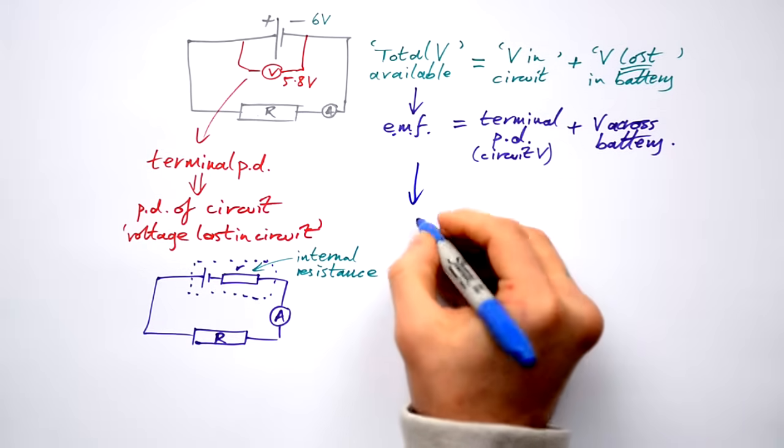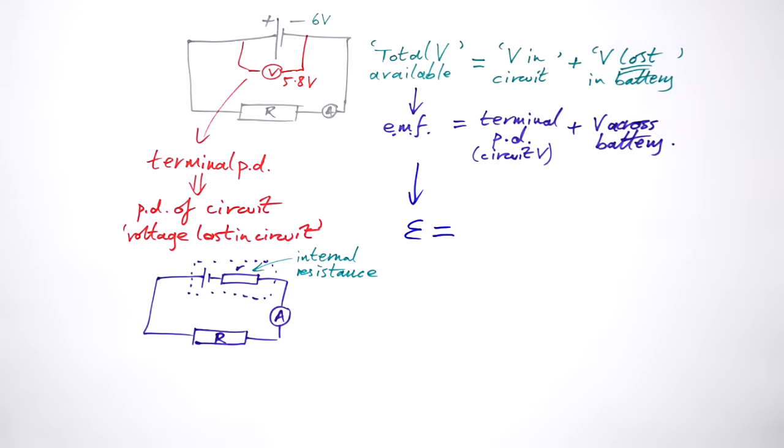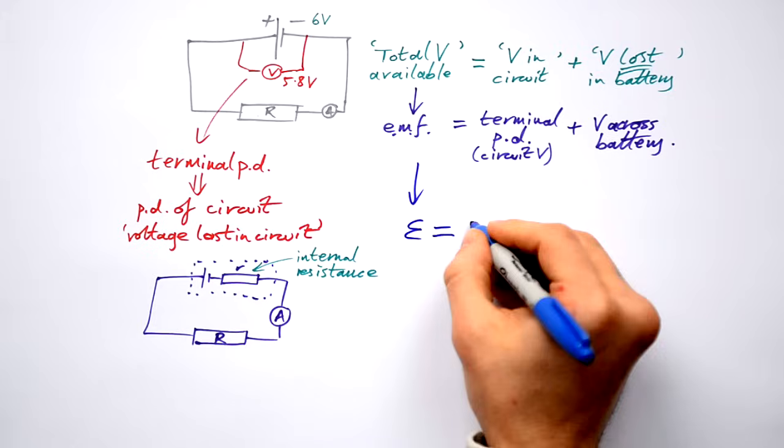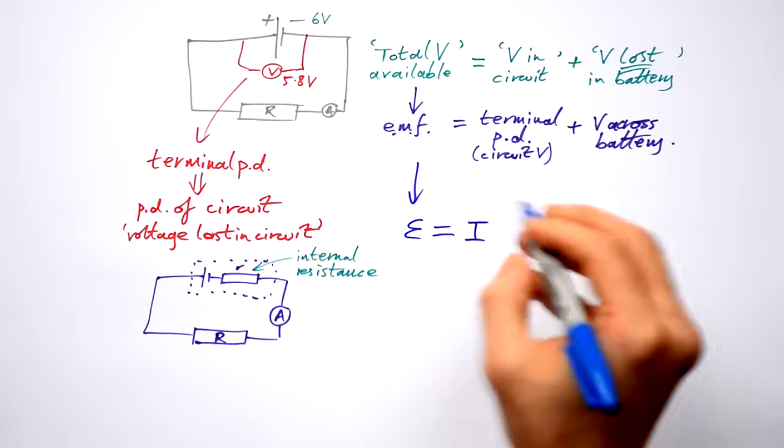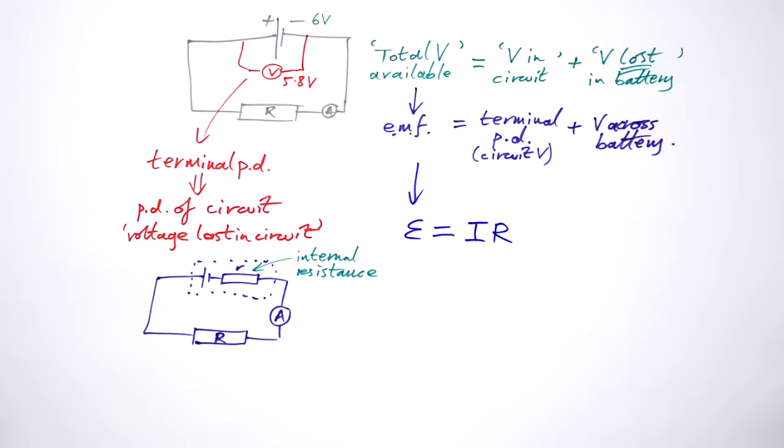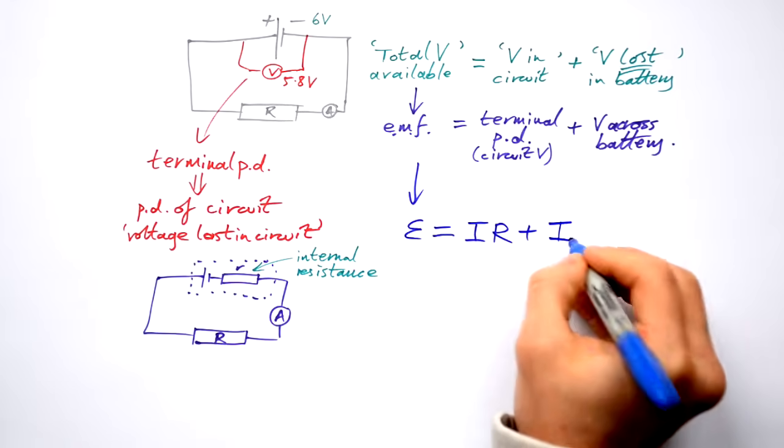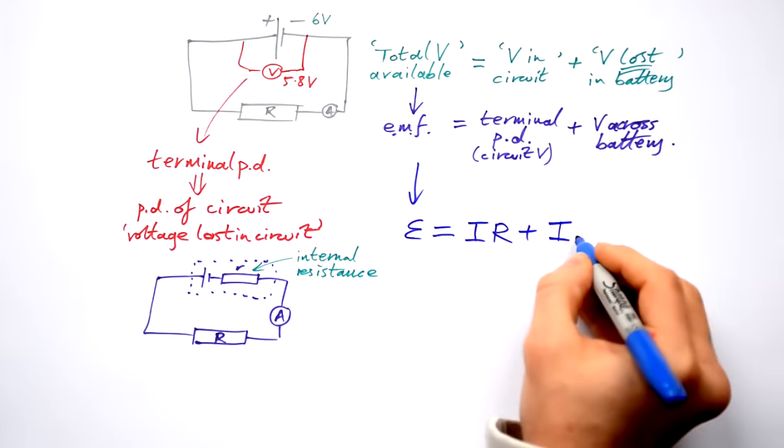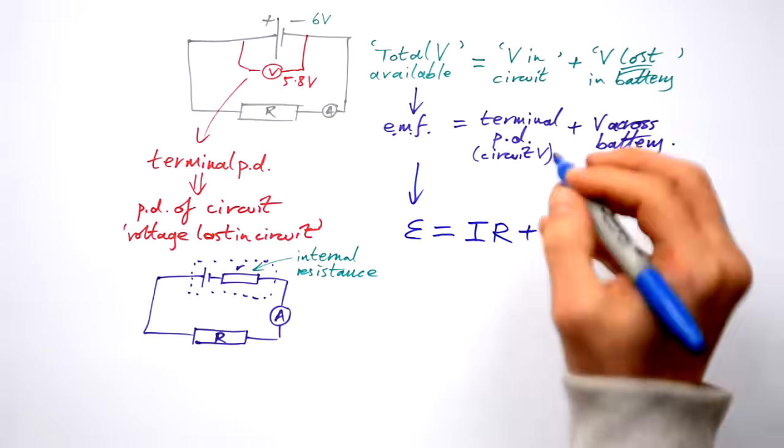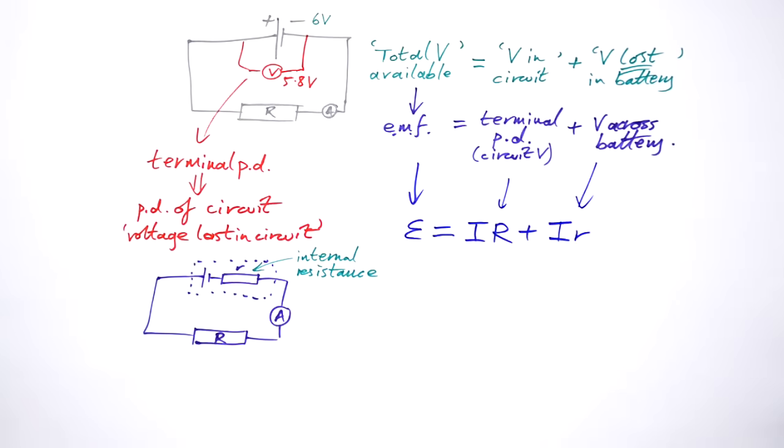So how can we describe this in an equation then? We give EMF the symbol epsilon. And we know that the terminal PD is going to be equals to the current that we measure in the circuit times the load resistance. That's the resistance of the circuit. We know that the current is going to be the same all the way around. So it's going to be the same for the battery as well. But it's not the load resistance. It's that little resistance there.